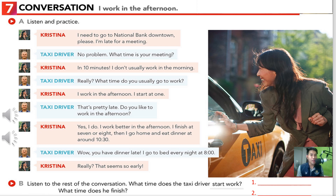So that would be the first listening. Let's talk about who is Christina and who is the taxi driver. Christina is the girl, as you can see in the big picture. The other guy, the old man, is the taxi driver. Christina works in National Bank downtown, while the taxi driver's job is to keep on driving, fetching and sending people to where they want to go — for example, like Christina, who would like to go to the National Bank.